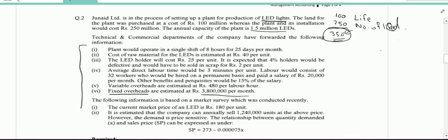Moving on, it says that technical and commercial departments of the company have formulated the following information. This information is available with you. Point number 1 is about plant will operate in a single shift of 8 hours for 25 days per month. So this does not have any cost information in it. Point number 2 says the cost of raw material for the LEDs is estimated at 40 per unit. And since it is per unit it is a variable cost. We have identified our first variable cost which is rupees 40.